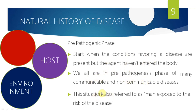Many communicable and non-communicable diseases have a pre-pathogenesis phase — for example, going to a restaurant where food poisoning has been reported, or being in an area where cholera is present. The pathogen can enter at any moment. Once it enters — whether Clostridium botulinum causing food poisoning or Vibrio cholerae — the pathogenesis phase starts. It may be clinical or subclinical, as seen with coronavirus where many show no symptoms.